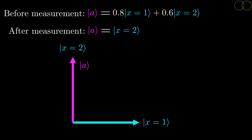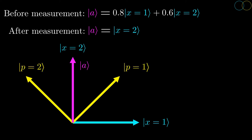But this doesn't just affect the observable that we are measuring. Since we are changing the state itself, the projection of the state onto the eigenvectors of any observable will change. This means that, as an example, possible values of the momentum will have different probabilities if we measure the momentum after we first measure the position.